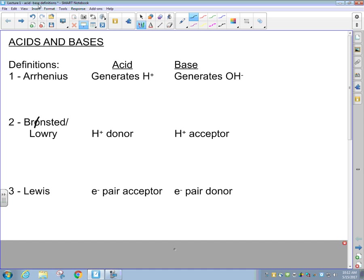The first definition, Arrhenius. Arrhenius is a Swedish chemist in 1887 who published a paper defining acids as solutions that generate hydrogen ions and bases as solutions that generate hydroxide ions.